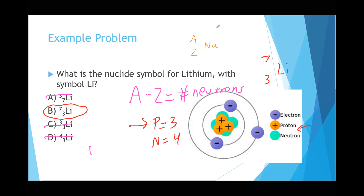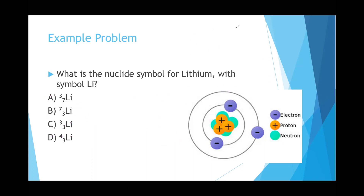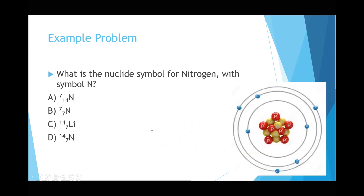We'll do another one of these so you'll have more practice for nuclide symbols — I know they can be a little challenging. So let's do it with nitrogen. What's the nuclide symbol for nitrogen? Remember, it is A on top, Z on the bottom, and then the atomic symbol.